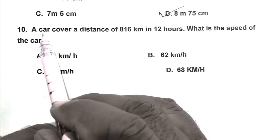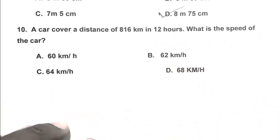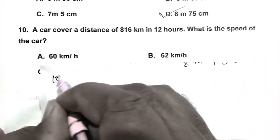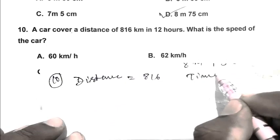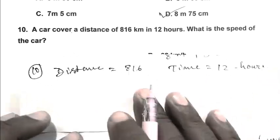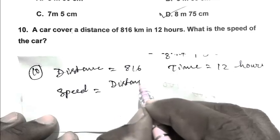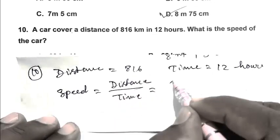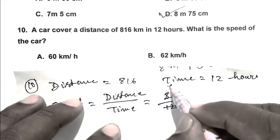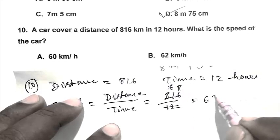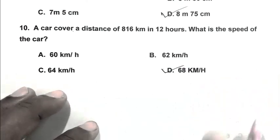Question number 10: A car covers a distance of 816 kilometers in 12 hours. What is the speed of the car? Distance covered is 816, time is 12 hours. Speed equals distance by time, so 816 upon 12 equals 68 kilometers per hour. So D is the right answer. Thank you for watching, have a good day.